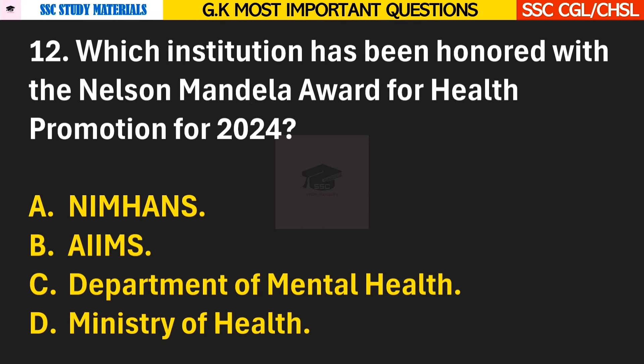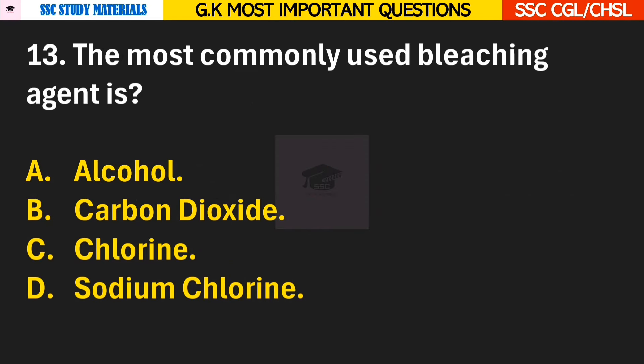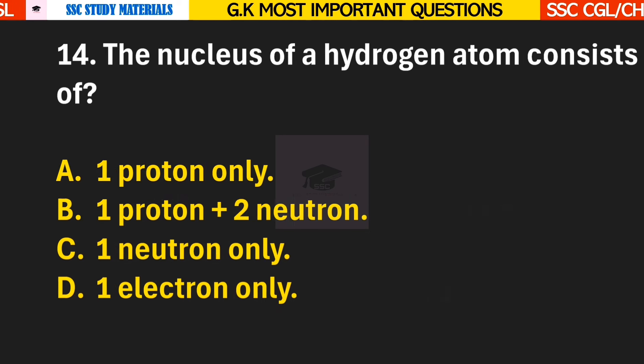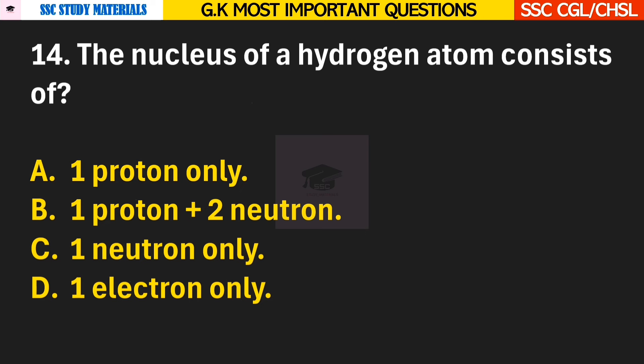Question 12: Which institution has been honored with the Nelson Mandela Award for Health Promotion for 2024? Answer A — NIMHANS. The full form is National Institute of Mental Health and Neurosciences. Question 13: The most commonly used bleaching agent is? Answer C — Chlorine. Question 14: The nucleus of a hydrogen atom consists of? Answer A — it consists of one proton only.